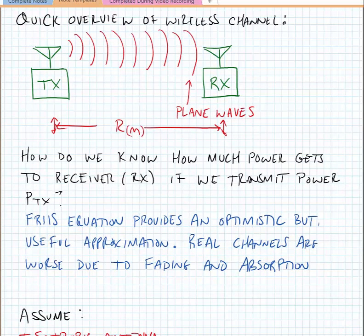The question we have is: how much of the power we transmit actually gets received at the receiver? The Friis equation provides us an optimistic but useful approximation. The real channel in a wireless system is typically worse, primarily due to fading and absorption — two topics you would find out more about in communications classes.